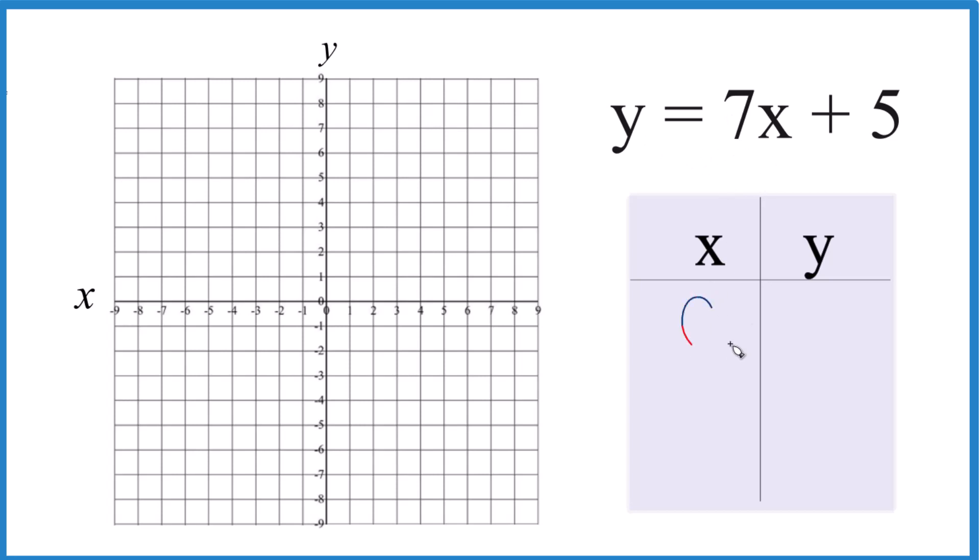I always like to start out with 0. 7 times 0 is just 0. 0 plus 5 is 5. So that's our first point.